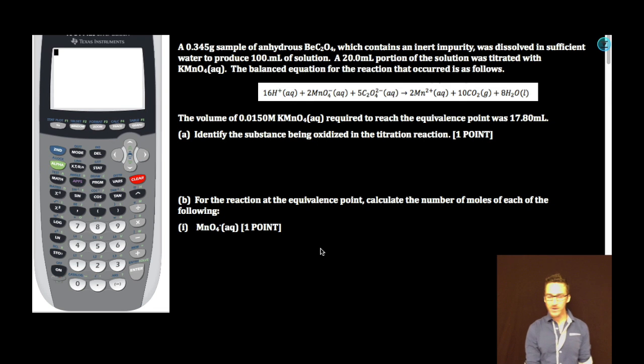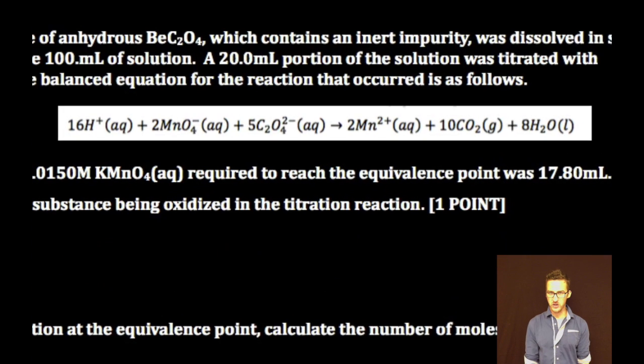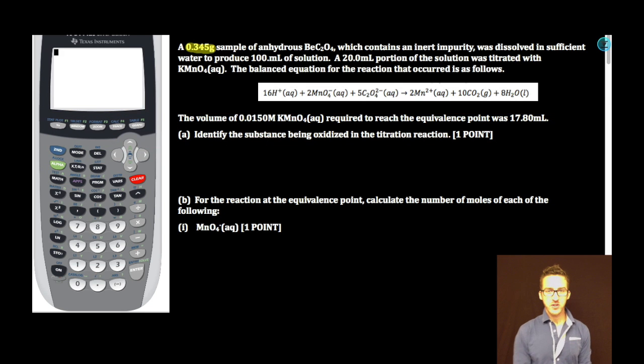Who's ready for some free response? A 0.345 gram sample of anhydrous beryllium oxalate, which contains an inert impurity, was dissolved in sufficient water to produce 100 milliliters of solution. A 20.0 milliliter portion of the solution was titrated with potassium permanganate. The balanced equation for the reaction that occurred is as follows. The volume of 0.0150 molar potassium permanganate required to reach the equivalence point was 17.80 milliliters.